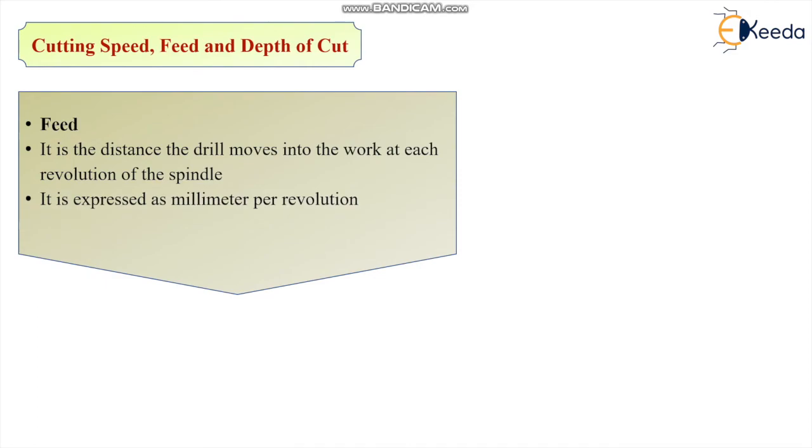Then feed. What is feed? Feed is the distance the drill moves into the work at every revolution of the spindle. For one revolution, how much depth the drill is achieving into the workpiece is our feed. And definitely it can be measured in mm per revolution, that is millimeter per revolution. It can also be measured or expressed as feed per minute. This is the feed for the drill.